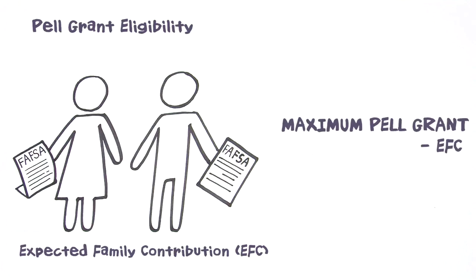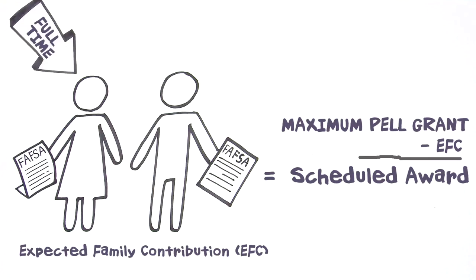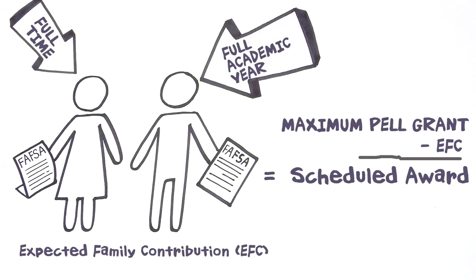That amount is then subtracted from the maximum Pell Grant amount. That final number is called a Scheduled Award. It's the maximum amount of Pell money a student can receive if attending school full-time over an academic year.